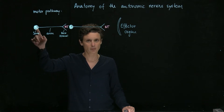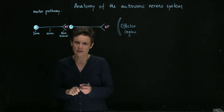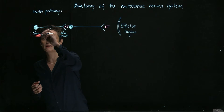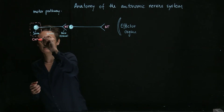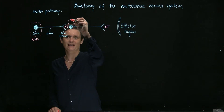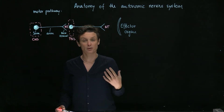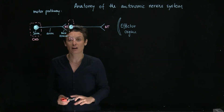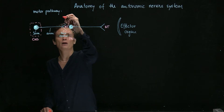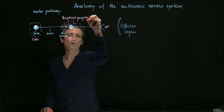A neuron always consists of a cell body, also called a soma, an axon, and a nerve terminal, which is going to release a neurotransmitter. Now, very importantly, if you think about where these structures are located: the soma of the first neuron is always located in the CNS, while the soma of the second neuron is located in the peripheral nervous system — it's outside the CNS. These somas of the second neuron are located in so-called peripheral ganglia. Ganglia is just a term for a collection of somas outside the CNS.